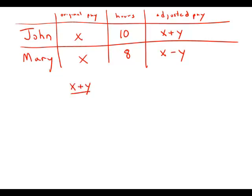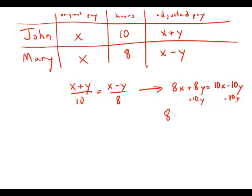So X plus Y over 10 equals X minus Y over 8. I'm going to cross multiply and get 8X plus 8Y equals 10X minus 10Y. I'm going to add 10Y to both sides. And this gives me 8X plus 18Y equals 10X. I'm now going to subtract 8X from both sides to get all the X's in one place. So this is 18Y equals 2X or 9Y equals X.